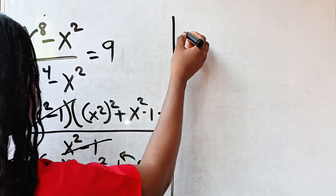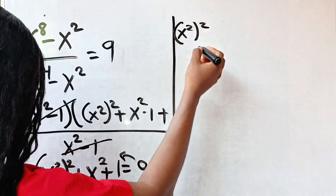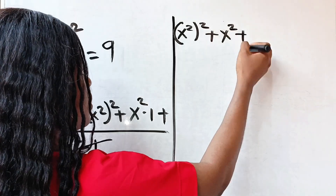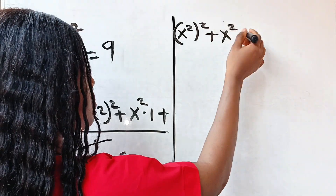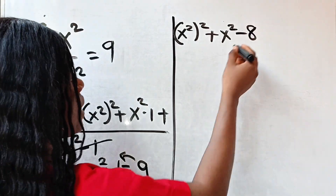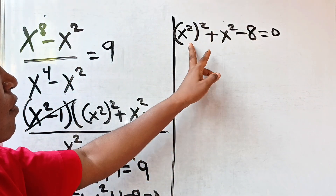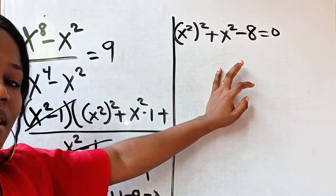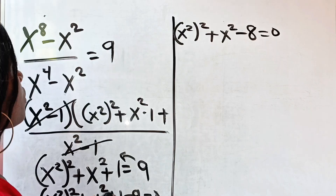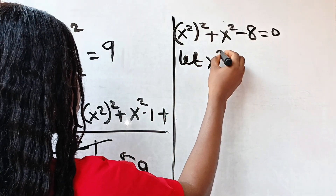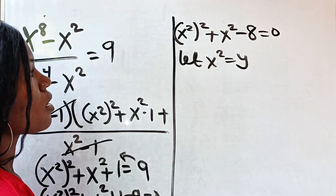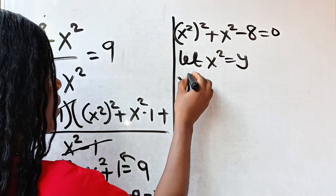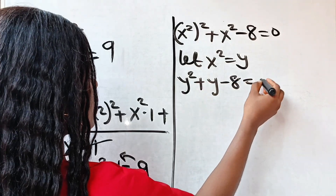We have x squared all squared plus x squared plus 1 minus 9. Since 1 minus 9 is minus 8, this gives us x squared all squared plus x squared minus 8 equals 0. Now let x squared be equal to y. That means this equation becomes y squared plus y minus 8 equals 0.